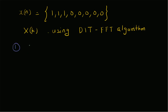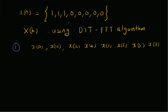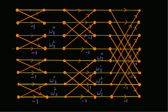In the first stage, the inputs have to be reorganized due to the decimation-in-time process. The new order is: x[0], x[4], x[2], x[6], x[1], x[5], x[3], x[7]. From the given input sequence, the corresponding values become: 1, 0, 1, 0, 1, 0, 0, 0.